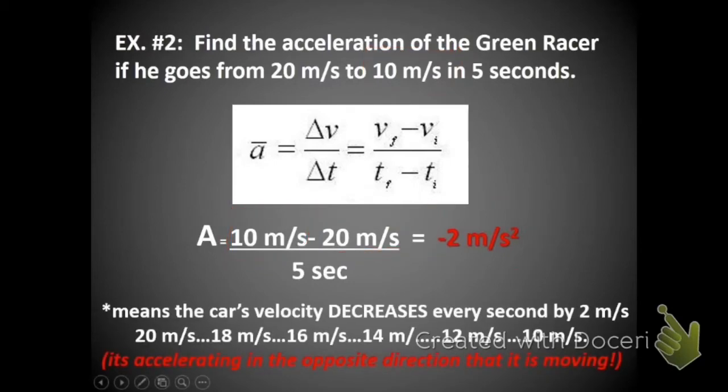Here, the negative acceleration is telling us that the car's velocity is decreasing every second, getting slower and slower by 2 meters per second. Its acceleration is in the opposite direction from its moving. The negative sign means opposite of its motion, which in this case is going to slow it down.